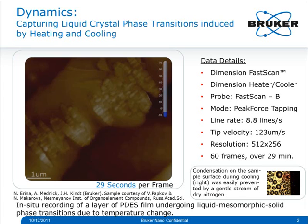The whole movie consists of 60 frames recorded over 29 minutes at a frame rate of 29 seconds per frame. Using the Dimension Heater Cooler together with the Dimension FastScan system is currently an open configuration, so when cooling one needs to be concerned with air moisture condensing on the sample surface — you can see a picture of that in the bottom right corner. This was easily prevented by setting up a stream of dry gas with a nozzle several centimeters away from the sample stage and directing a gentle stream of dry gas at the sample.